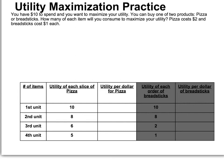First, calculate the marginal utility per dollar for both pizza and breadsticks. Starting with the pizza column: each slice costs $2, so the first unit is 10 divided by $2, which equals 5 utils per dollar. The second unit: 8 divided by $2 equals 4. The third unit: 6 divided by 2 equals 3. And 5 divided by 2 equals 2.5. That's utils per dollar, or usefulness per dollar. For breadsticks at $1 each: 10 divided by 1 equals 10; 8 divided by 1 equals 8; 2 divided by 1 equals 2; and 1 divided by 1 equals 1.